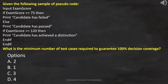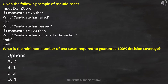The question is: given the following sample of pseudocode, what is the minimum number of test cases required to guarantee 100% decision coverage? Options are provided. Let's analyze the pseudocode and draw a flowchart to get the correct answer.